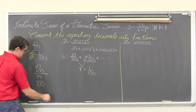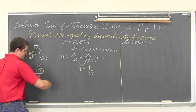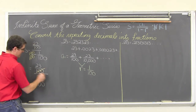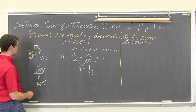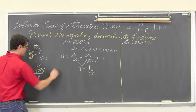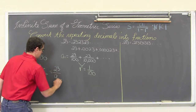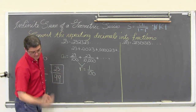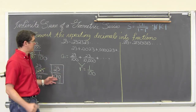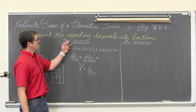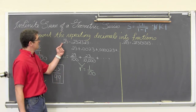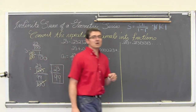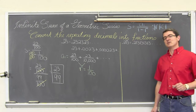This geometric series has an infinite sum of S equals a sub 1 over 1 minus r. That is going to be equal to 23 over 100, over 99 over 100. Here we have the exact same denominator. So when I flip the bottom up, all that is going to happen is our common denominators of 100 cancel out, and we end up with 23 over 99. So 23 divided by 99 is going to be .23 repeating in your calculator.